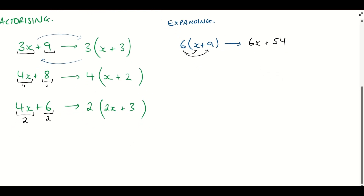We could check this by factorizing it back again. If we do this as a factorizing problem, we look for the highest common factor amongst 6x and 54, which is 6. We bring our 6 out the front, and we're left with x, and 6 goes into 54 nine times. So we can go forwards and backwards between factorizing and expanding.